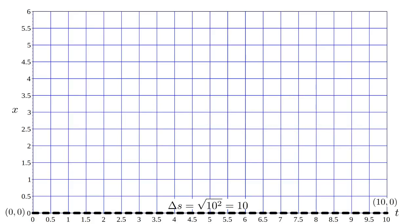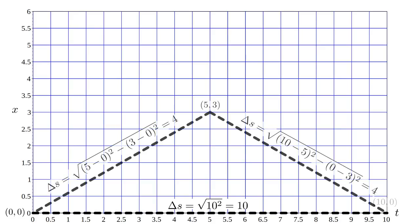In our twin scenario, Earl stays at x equals zero for ten years. His velocity is zero and the proper time of his space-time path is ten years. On her outbound segment, Stacy moves three light years in five years. Her velocity is three over five and the proper time of her path is four. On her inbound segment, she again moves three light years in five years. Her velocity is minus three over five and she experiences another four years of proper time. Thus she ages a total of eight years to Earl's ten.